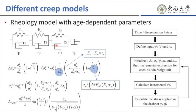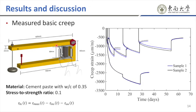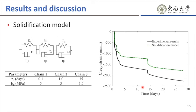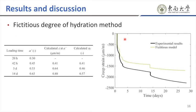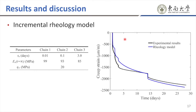To compare the different models, experimental creep results of cement paste with a water-to-cement ratio of 0.35 were used. The creep results under constant loading at different loading ages were used to determine the parameters in different models, and the results under stepwise loading were used to verify the models. With the present parameters, the solidification model underestimates the creep strain compared to the experimental results, mainly due to inaccurate prediction under the first two loads. A similar situation occurs for the fictitious model. However, using the incremental rheology model with age-dependent parameters, the predicted results agree reasonably well with the experimental results, especially at later age.